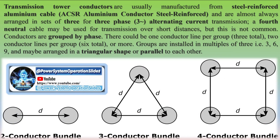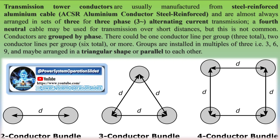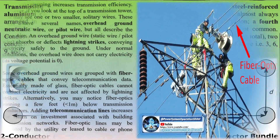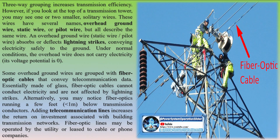In transmission line design, determination of voltage drop, transmission efficiency, line loss, etc. are important parameters. These values are affected by line parameters R, L, and C of the transmission line. Lengthwise, transmission lines are of three types.